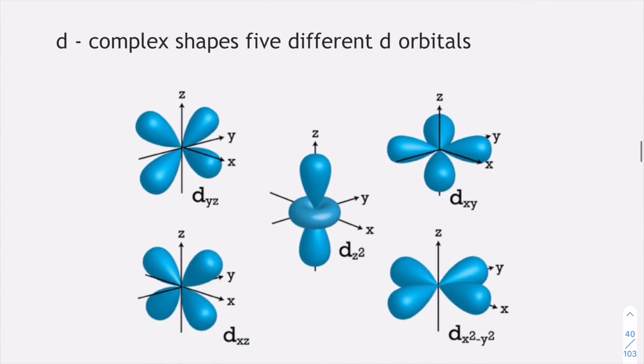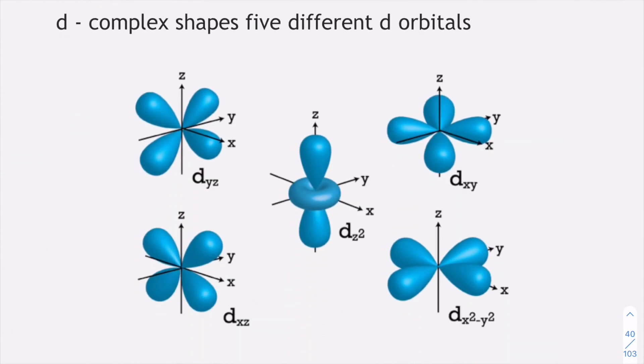If you scroll down to your d orbitals they ought to be a bit more complex. You can have a look at for example this first one here. It's between the y and the z axis so it's kind of lying between the two of them. The only one you will be asked to identify is this dz squared. The reason for that is it's your dumbbell shape with this kind of donut shape around the middle. So that's the only d orbital you will be asked to identify. The rest of them is just going to be your p or your s.